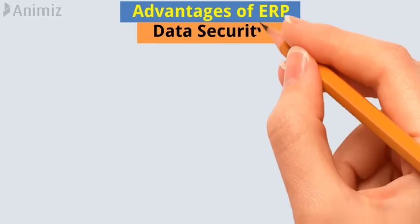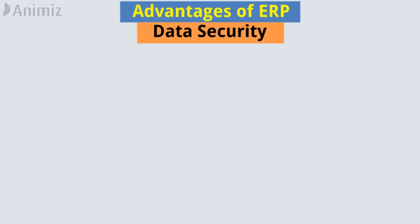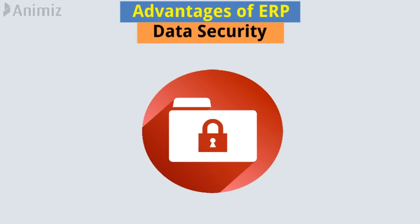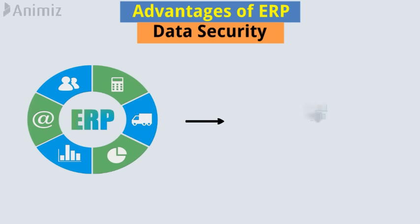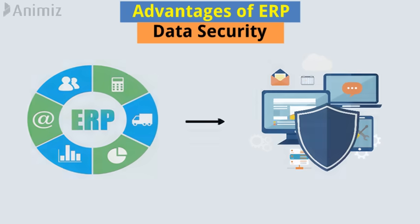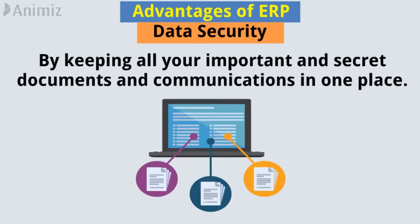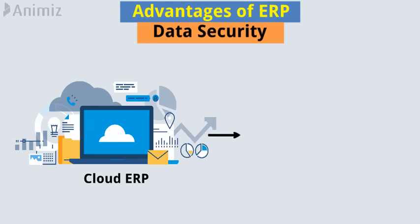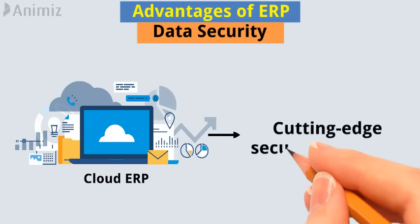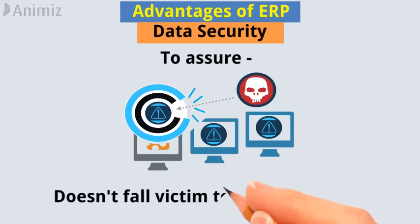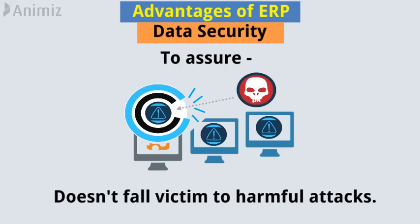Fifth, data security. Your company deals with a lot of sensitive data. An ERP system provides security by keeping all your important and confidential documents and communications in one place. Cloud ERP uses cutting-edge security protocols to ensure your company doesn't fall victim to harmful attacks.